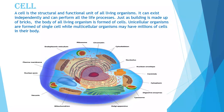So what is a cell? A cell is a structural and functional unit of all living organisms. It can exist independently and can perform all the life processes. Just as a building is made up of bricks, the body of all living organisms is formed of cells. Unicellular organisms like amoeba are formed of a single cell, but that single cell is able to perform all the life processes, while multicellular organisms like humans, plants and animals have millions of cells in their body performing all the functions.